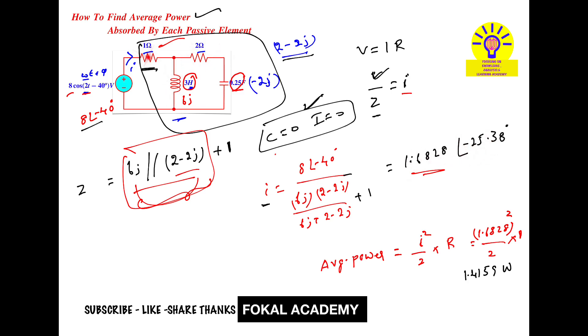The source current splits into two branches. Let's find the current in the 2 ohm branch, which we'll call I1. Using current division rule, I1 = [6j/(6j + 2 - 2j)] × I. Substituting the source current: I1 = [6j/(6j + 2 - 2j)] × 1.6828∠-25.38°.